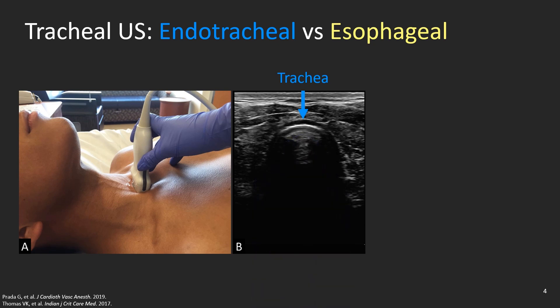Now, what do you think happens when you insert a tube inside this trachea? Nothing. Nothing happens. The image does not change at all. Endotracheal intubation looks exactly the same as no intubation at all. You still get the single comet tail artifact. You cannot see the tube inside the trachea because the air inside the trachea prevents you from seeing what's inside, including the tube. Remember that air is the worst enemy of ultrasound.